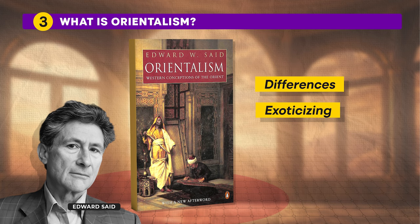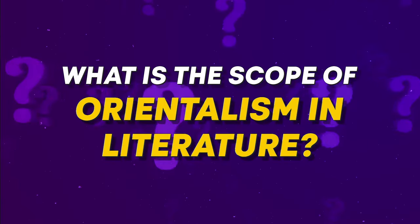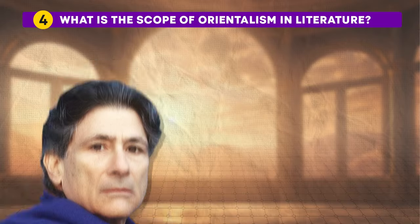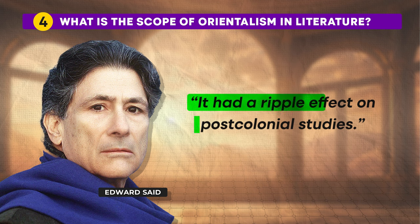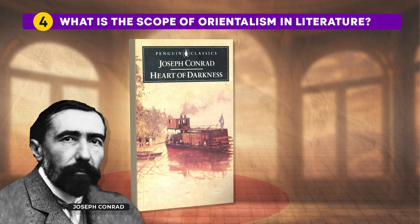What is the scope of Orientalism in literature? Said's work did not just impact academia — it also had a ripple effect on post-colonial studies. For instance, in Joseph Conrad's 19th-century novella Heart of Darkness, you can observe the exploration of the dynamics between colonial powers and native people from a colonial perspective, viewed through an Orientalist lens.